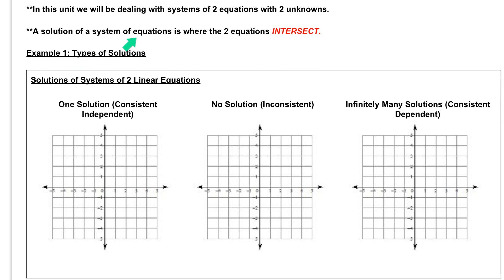In example one here we're just going to look at the different types of solutions that we can get. The first one is the solution of systems of two linear equations, so two lines that are intersecting.